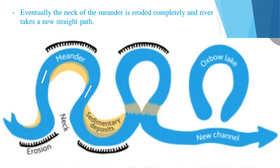Have a look at this diagram. This is the part of the river where the erosion is taking place on the outside of the bank. This black color comb-like symbol is showing you the erosion, whereas this yellow color is showing you the sediment deposition on the inside of the bank. As the erosion is faster at the outside of the bank, the neck of the meander is becoming narrower and narrower, and eventually the river will take a straight path after joining the two meandering points.